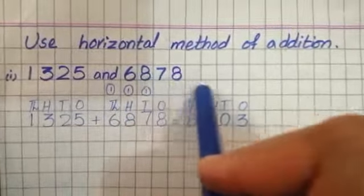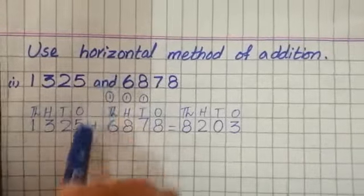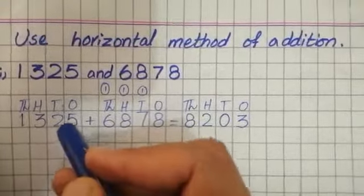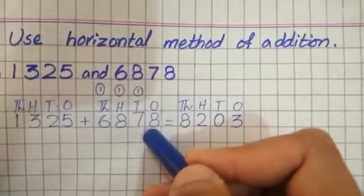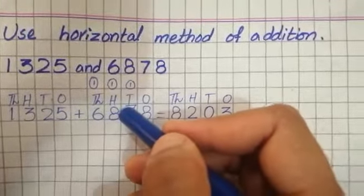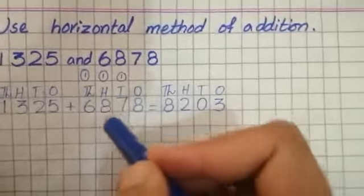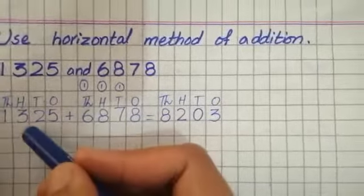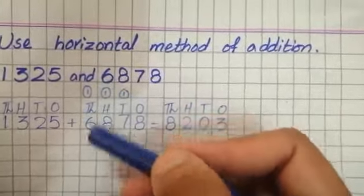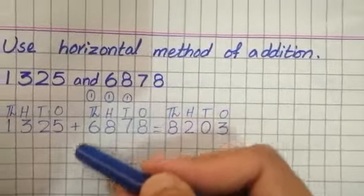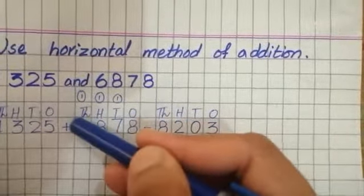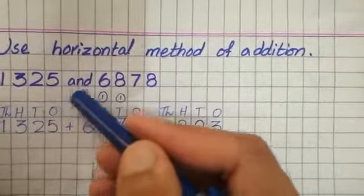Next is 1,325 and 6,878. Again rewrite the number with sign of plus. 5 plus 8 becomes 13. You can write 3 in 1's and 1 carry on 10's house. Now 7 plus 1 is 8, and 8 plus 2 is 10. In 10's house you write 0 and carry 1. Now 8 plus 1 is 9, 9 plus 3 is 12. 2 should be in 100's and 1 over 1000's. Now 6 plus 1 is 7, 7 plus 1 is 8.